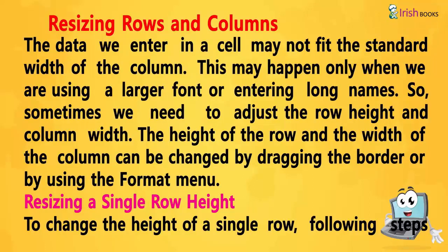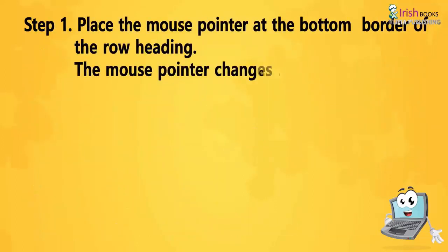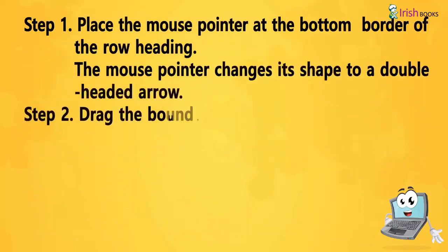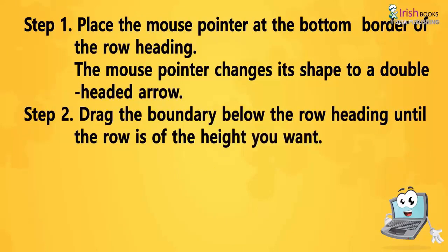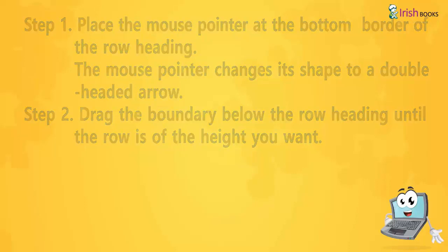Resizing a single row height: To change the height of a single row, follow these steps. Step 1: Place the mouse pointer at the bottom border of the row heading — the mouse pointer changes its shape to a double-headed arrow. Step 2: Drag the boundary below the row heading until the row is the desired height.